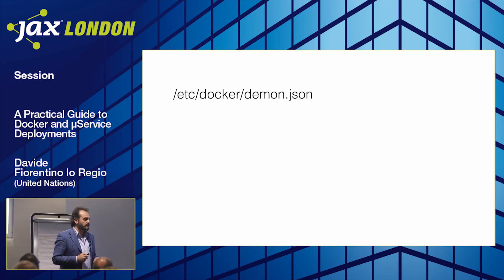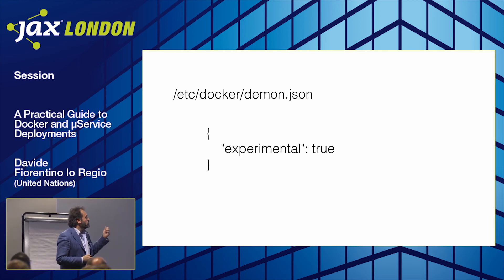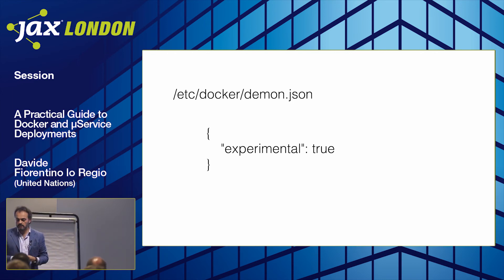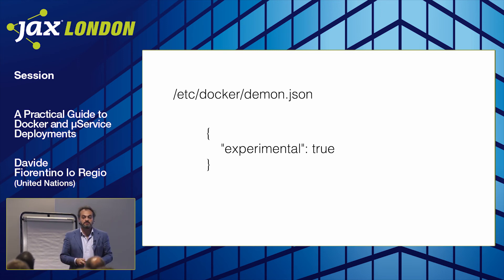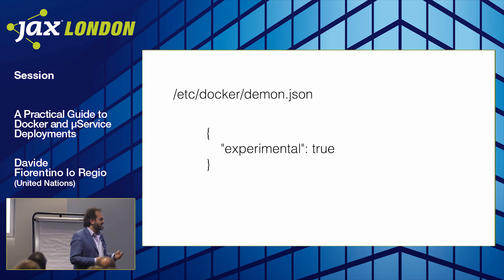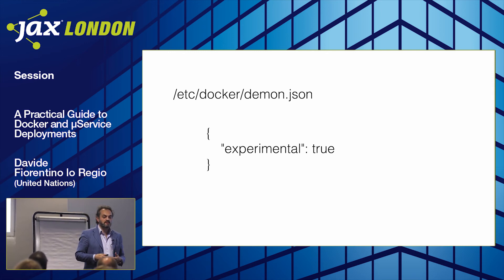At some point Docker uses experimental features. To use them, you have to define a config file in your directory. The good thing is that Docker will not use experimental features unless you tell it to. So if you're running stable commands, it will use the stable version — it won't break things.